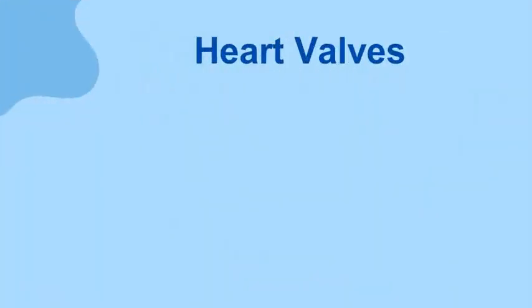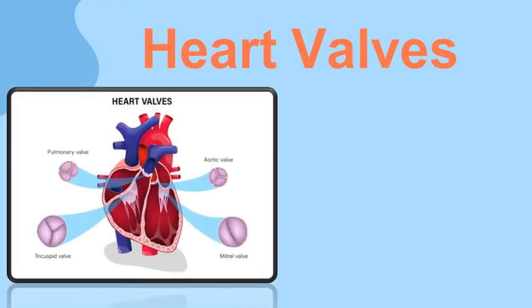The heart has four valves: aortic, mitral, tricuspid, and pulmonary. The aortic valve lies between the left ventricle and the aorta. The mitral valve lies between the left atrium and the left ventricle. The pulmonary valve lies between the right ventricle and the pulmonary artery. The tricuspid valve lies between the right atrium and the right ventricle.